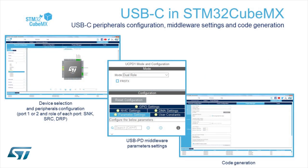STM32CubeMX is part of the USB-C ecosystem that we offer. This is the tool you can use to first select which device you want to use — which STM32 G0 — how many ports you want to use, and what the roles of these ports are. It could be sink, source, DRP, or FRS. You can also use it to select the parameters for the USB-PD middleware, and then generate projects based on the parameters you have selected.